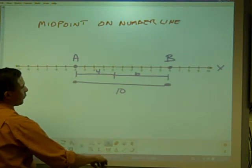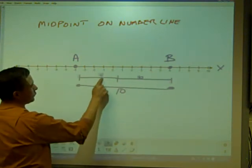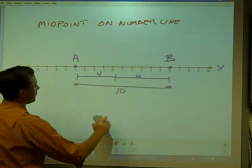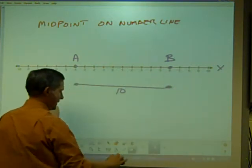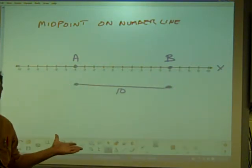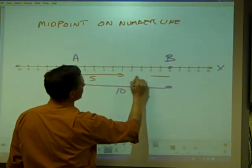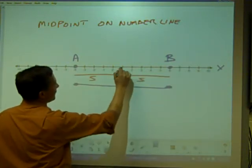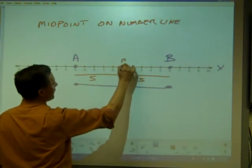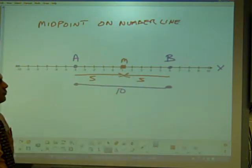We know the midpoint then breaks ten in half - it's five and five. So it goes five this way and five this way. Well, that puts this right there on the midpoint, which is point one.